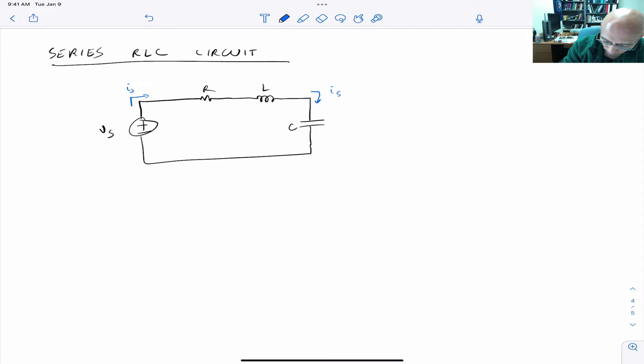We can define a voltage VC across the capacitor and a VL across the inductor, and then another voltage across the resistor. Because we know the resistance, we can just use Ohm's law and write this as IS times R, source current times resistance.